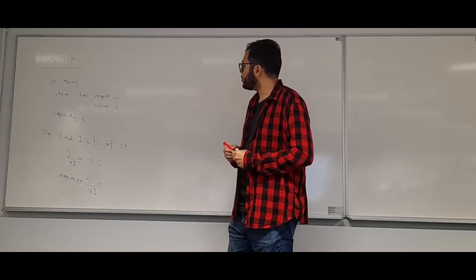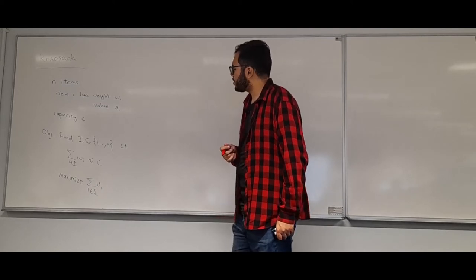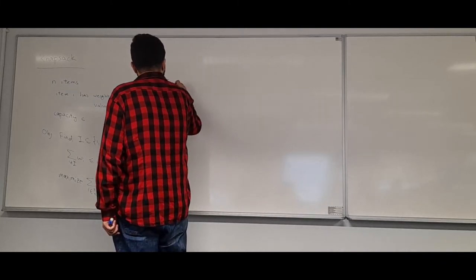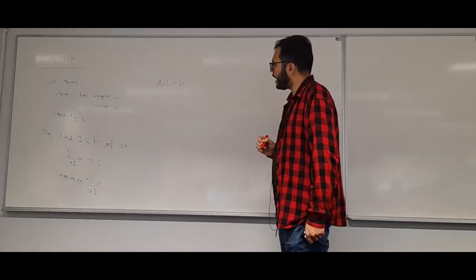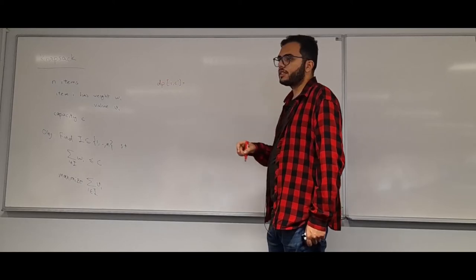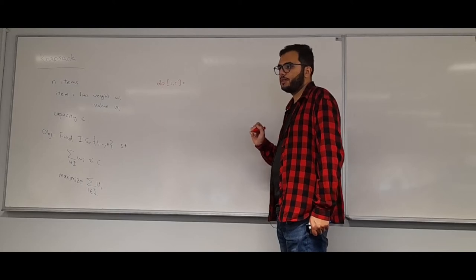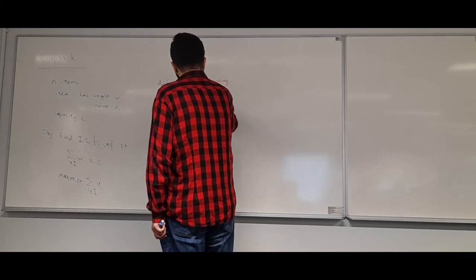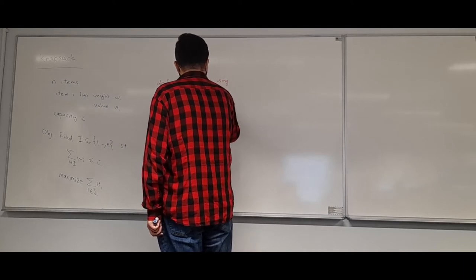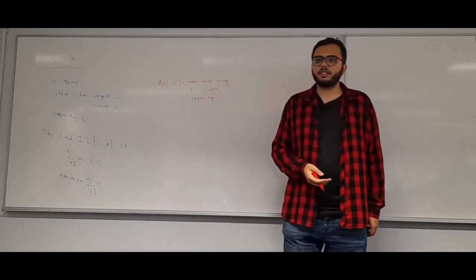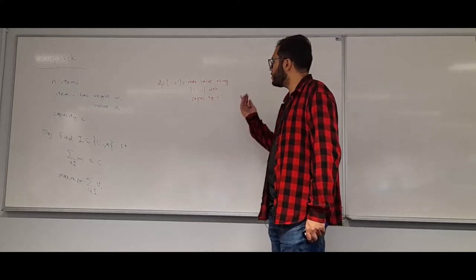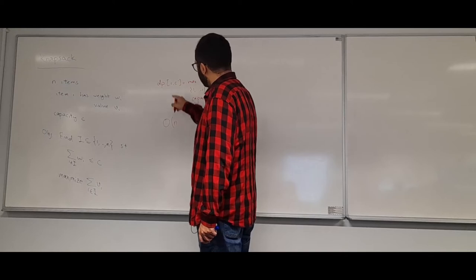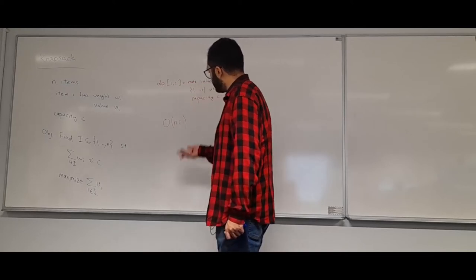Recall the pseudo-polynomial time dynamic programming: DP[i][C'] is the maximum value using only the first i items with capacity C'. I can easily compute this; the total runtime is O(N·C) — N choices for i and C choices for C'.